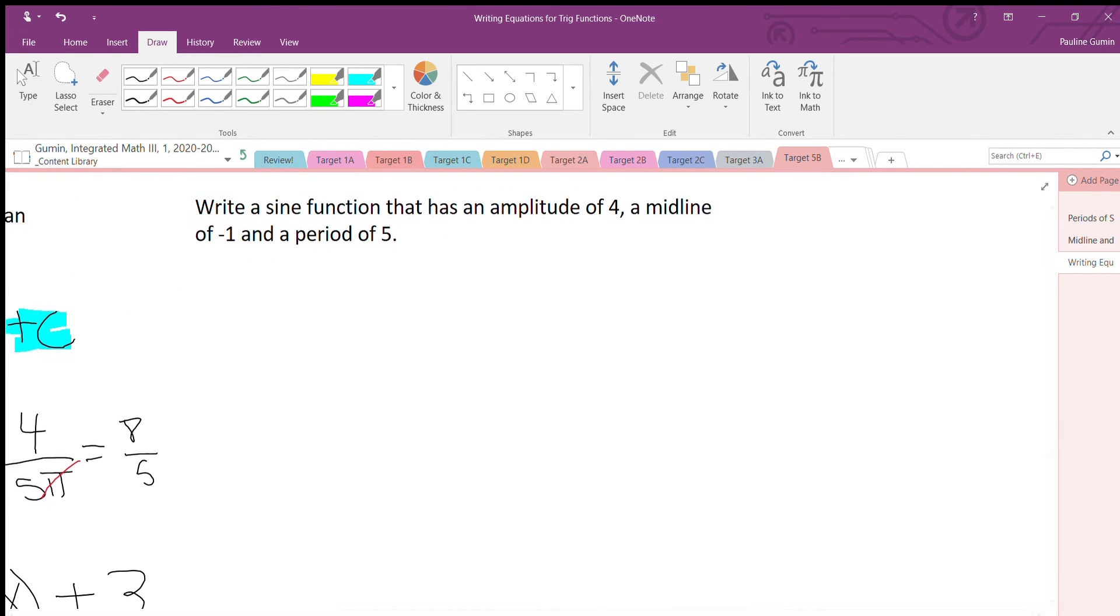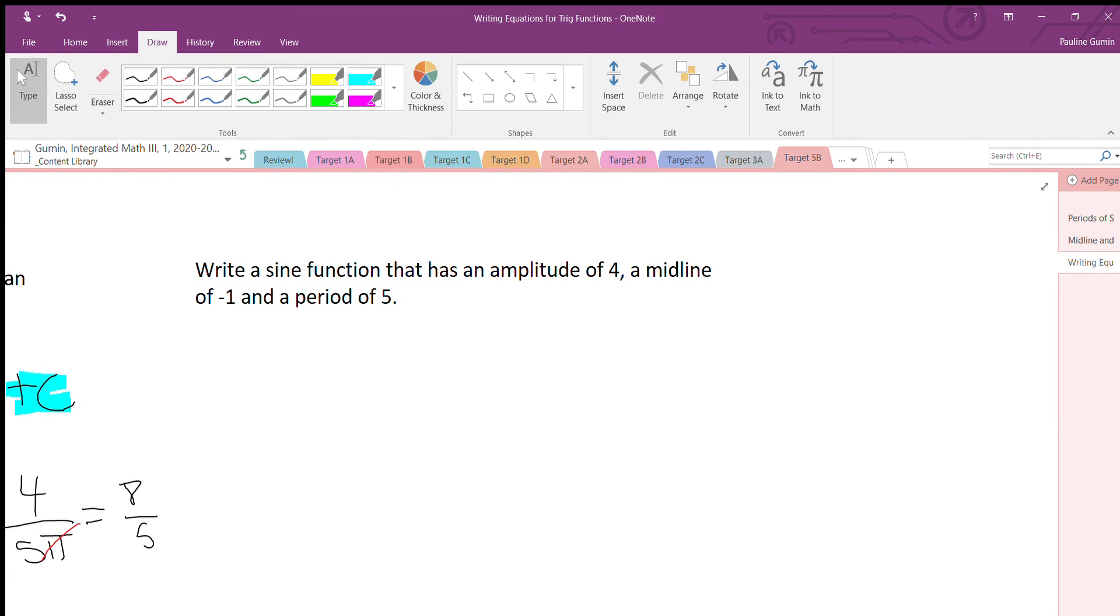One more, and we're good to go. Alright. Sine function this time, so it will follow this equation. It's the same as the other one, just with sine written in it. Let's see what we got. We got amplitude 4. Great. Midline negative 1. And a period of 5, which we'll have to calculate for B. So let's do that.